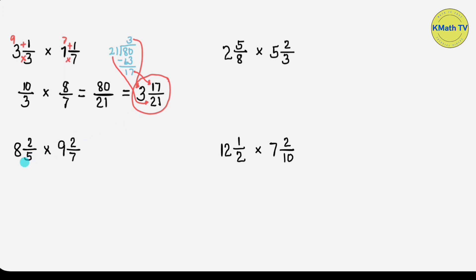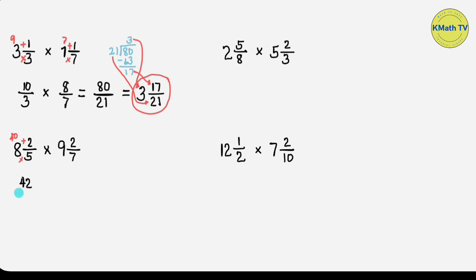Next example: 8 and 2/5 times 9 and 2/7. Let's change each mixed number to an improper fraction. Multiply the denominator and the whole number: 5 times 8 equals 40. Then add the numerator plus 2: 40 plus 2 equals 42. This is the new numerator. Copy the denominator: 5.